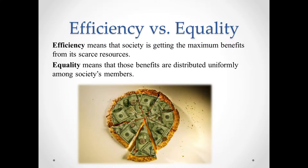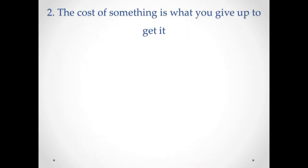When governments make decisions, these two goals are often in conflict. When the government redistributes income from the rich to the poor, it reduces the reward for working hard. As a result, people work less and produce fewer goods and services. In other words, when the government tries to cut the economic pie into more equal slices, the pie gets smaller.